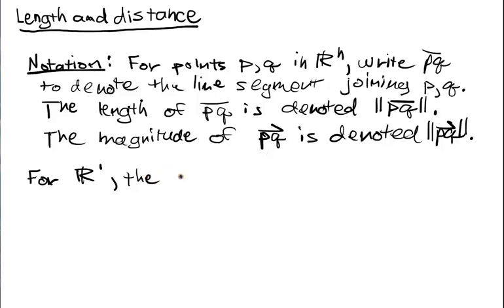Well, the magnitude... So now P and Q are just numbers. So P, that arrow is just equal to the absolute value of Q minus P. That's it.